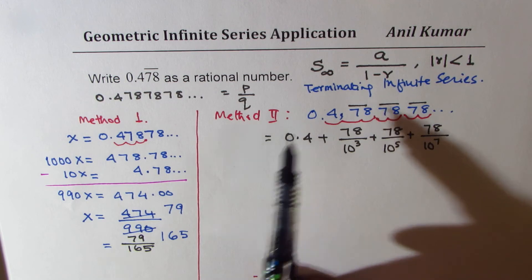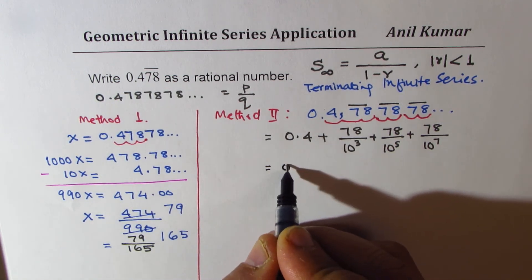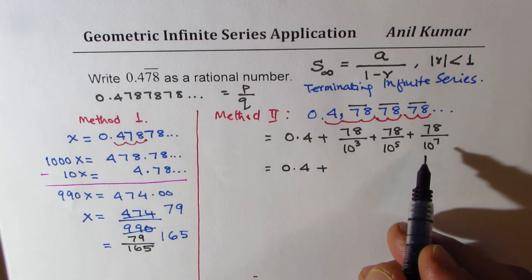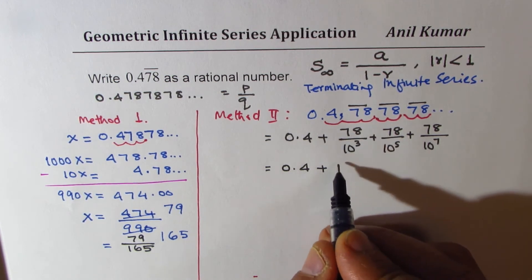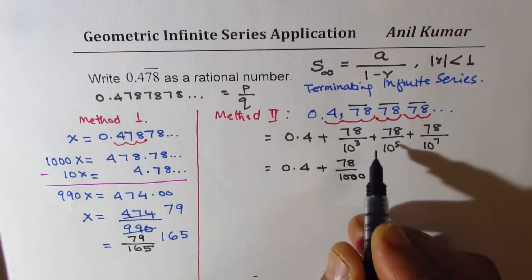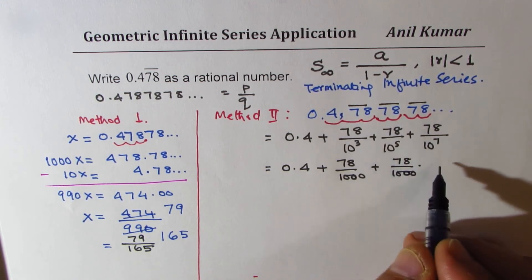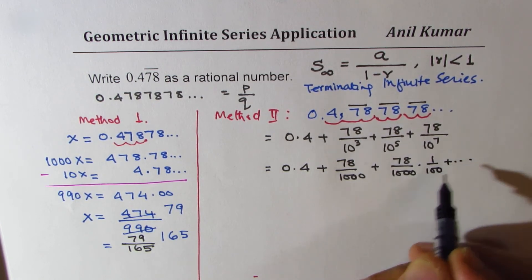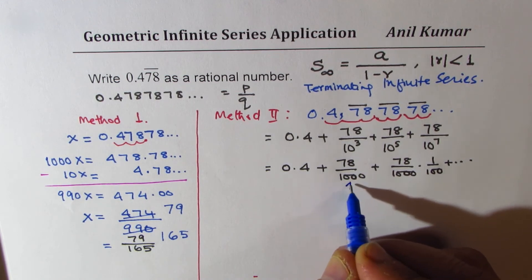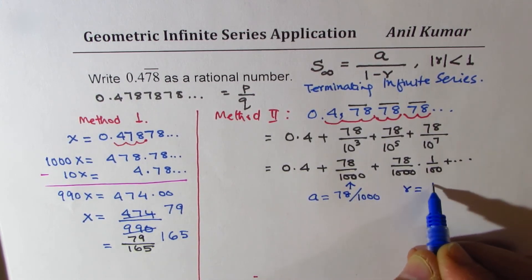So what we get here is that the decimal repeating number 0.478 could be written as 0.4 plus a repeating portion. What is repeating here? We have the first term which is constant, which is 78 over 1000. And what repeats is 78 over 1000 being multiplied by 1 over 100. So R is 1 over 100. What we find here is that A equals 78 over 1000 and R equals 1 over 100.